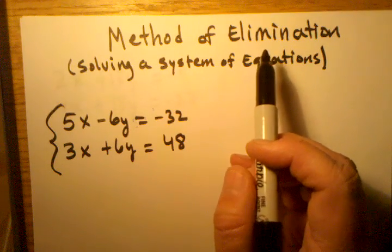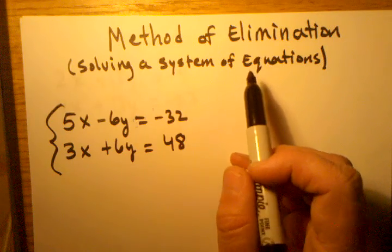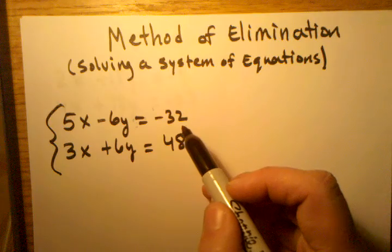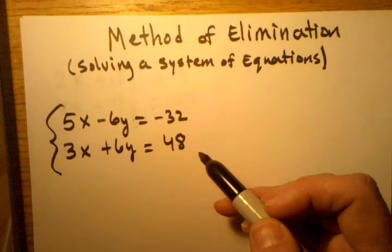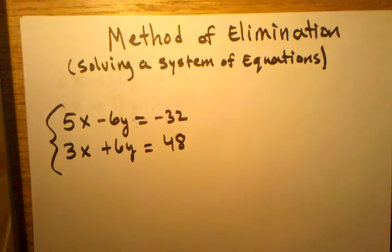By now, you most likely have already studied the method of substitution, usually that one's taught first, and method of graphing, where you actually visualize the lines on the graph, and you see where they intersect, and you find the point that way. This is just yet another way of finding out the same information.